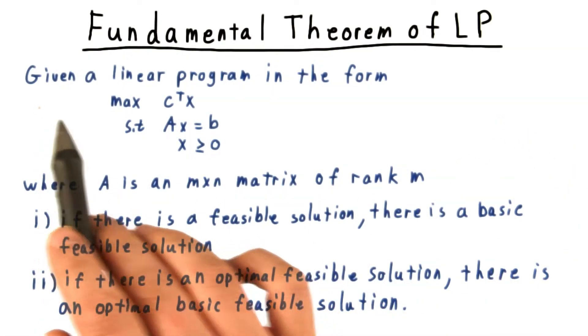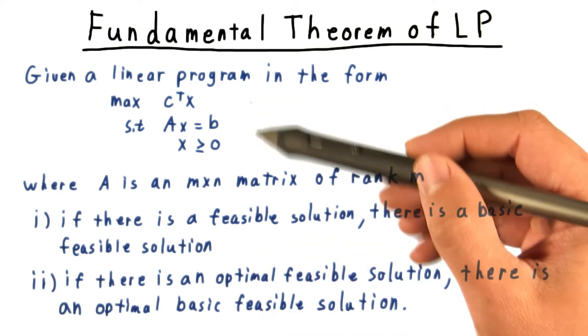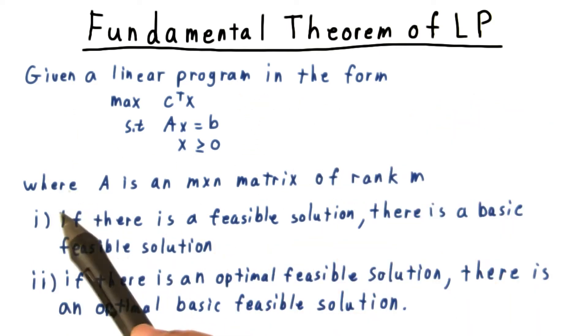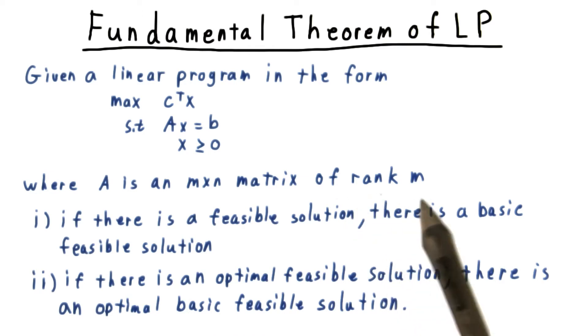Precisely, the theorem states that given a linear program in this standard form, where A is an m by n matrix of rank m, then if there's a feasible solution, there is a basic feasible solution. And if there is an optimal feasible solution, there is an optimal basic feasible solution.